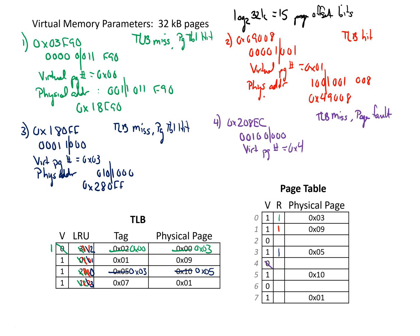We're going to replace entry 4 since that's the virtual page number we need, setting its valid bit to 1 and marking that we referenced that page. We assign it a physical page number of hex 0x11 — one more than the maximum page number currently shown. We then go into our TLB, replace the least recently used entry, update the LRU counters, change the tag to virtual page number 4, and set the physical page to 0x11. We create the final physical address by combining 0x11 with the three most significant bits of the offset, giving us a physical address of 0x888EC. This concludes the four examples.